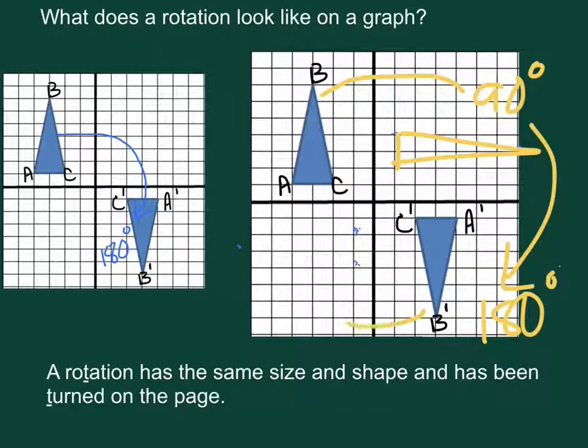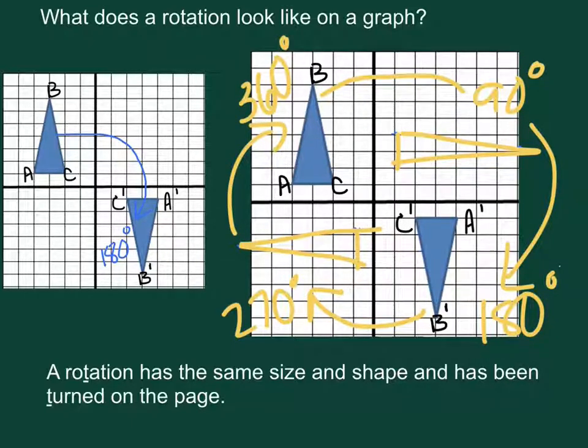Every time you make a quarter turn, this would be 270 degrees and these would all be clockwise. You could also go counterclockwise and then 360 degrees of course would be back where you began.